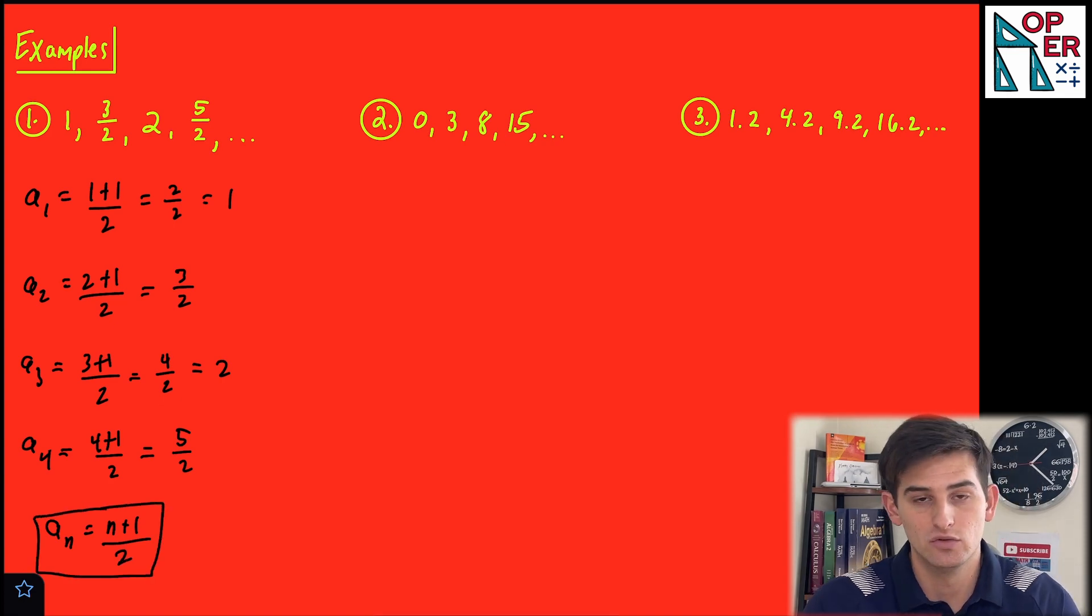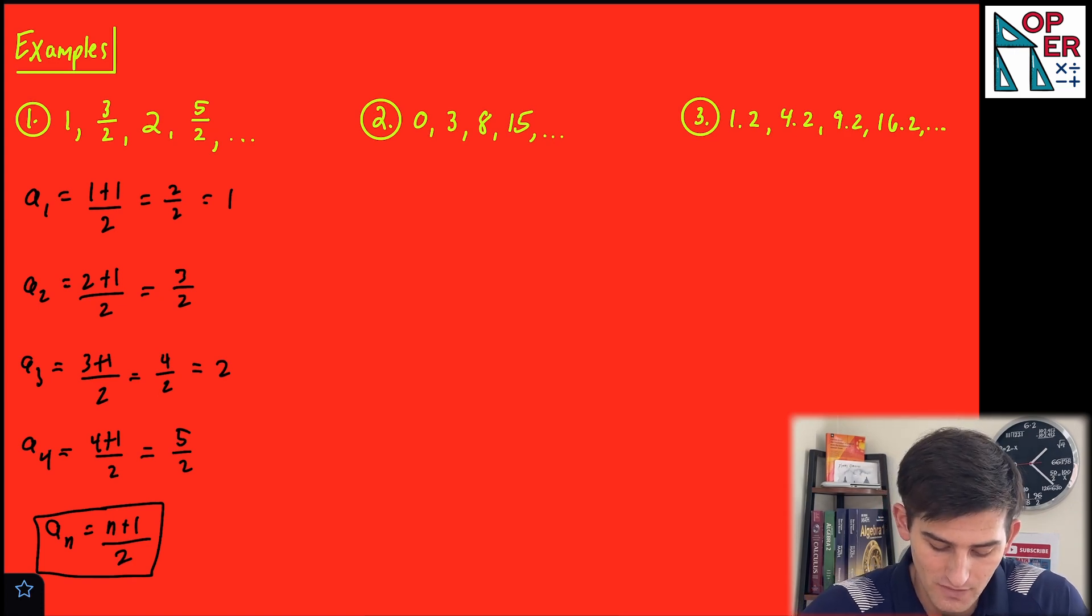So we could write the nth term as a sub n equals n plus one over two. And then we could use that rule to find whatever position term that we want to find in the sequence.